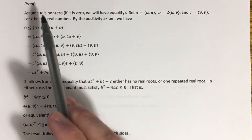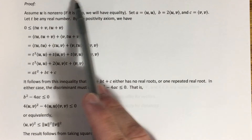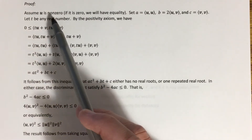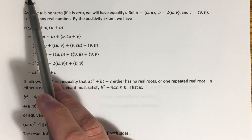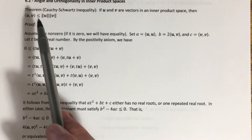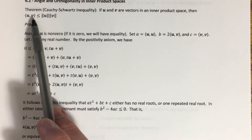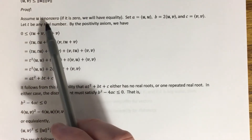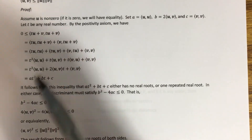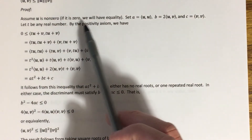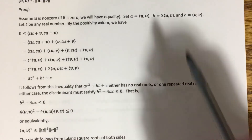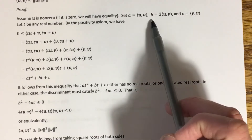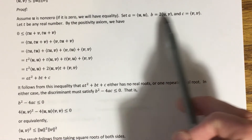We're going to start with two vectors u and v in this inner product space and assume that u is non-zero. The reason for that assumption is because if u were equal to zero, both sides of the inequality would be zero, making it trivially true — zero is less than or equal to zero. So there's nothing really to prove in that case, and we're safe assuming u is non-zero. We don't really care about whether or not v is zero. Then I'm going to define three values: a, b, and c.